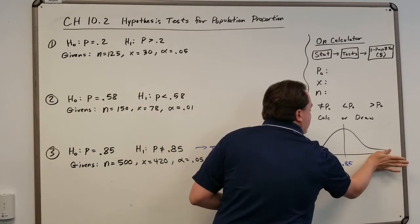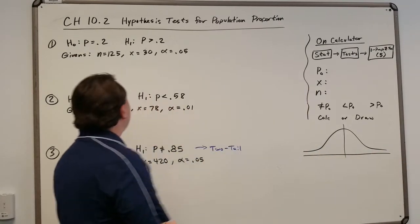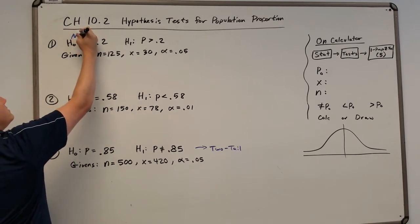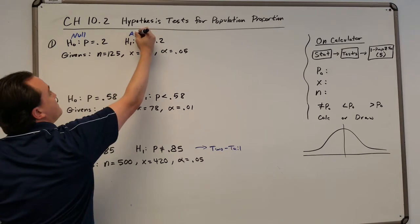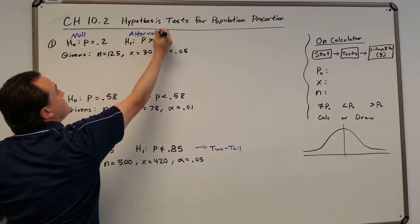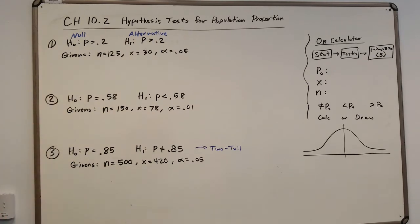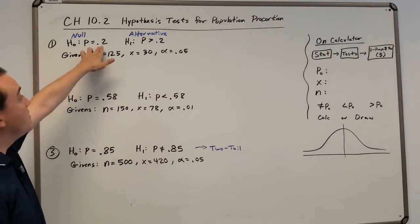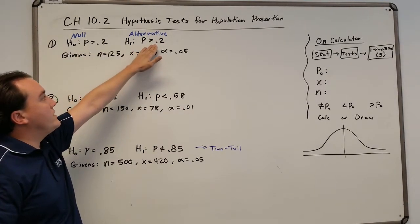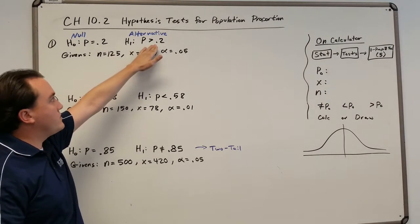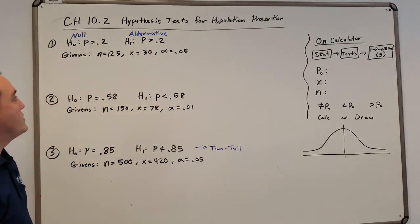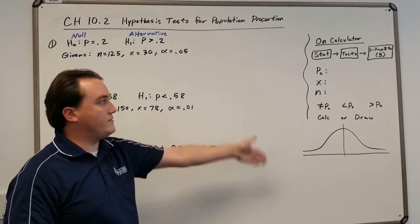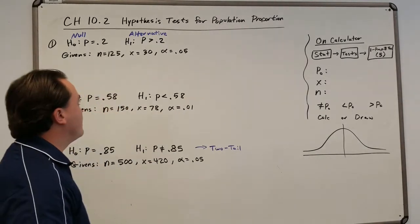Okay, so let's do these problems. First one, we have a null hypothesis, right? This means null, and this means alternative. Okay, so we're trying to test, we have an original population proportion of 0.2, or 20%, and then we're trying to figure out if this has grown over the years, greater than 0.2. So here's how we do it. You can do this by hand, but it's probably better just to use the calculator.